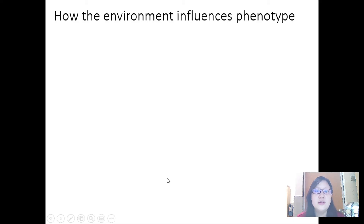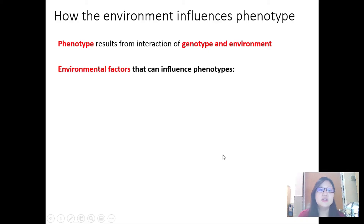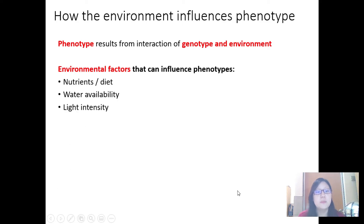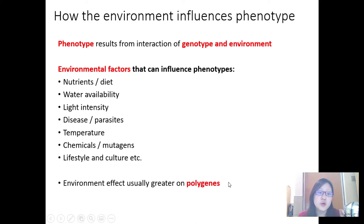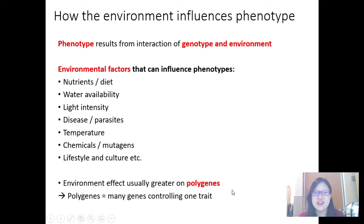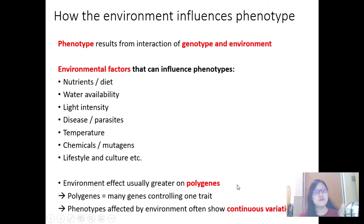Now let's talk about how the environment can influence phenotypes — environmental variation. Environmental factors that can influence phenotypes include nutrients and diet (especially weight and health), water availability, light intensity for plants, disease or parasites, temperature, and even lifestyle and culture — for example, IQ in humans. The environmental effect is usually greater on polygenic traits — traits coded for by many genes. Therefore, phenotypes affected by the environment often show continuous variation.